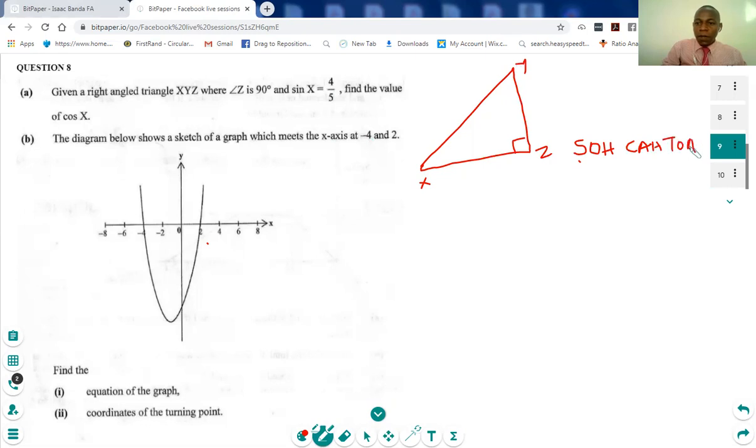We know that the sin of an angle is equal to the opposite of that angle over the hypotenuse. So if this is the opposite, it means it's 4, so this will be 4, and the hypotenuse will be 5.